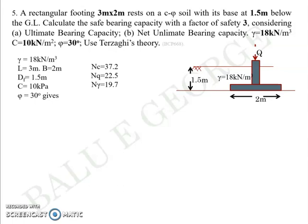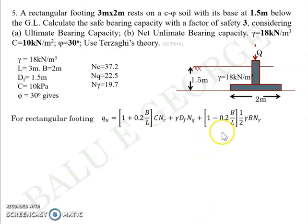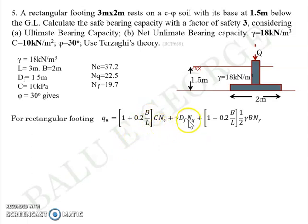Since it is a rectangular foundation, the equation to estimate qu includes two shape factors: 1 plus 0.2(B/L) and 1 minus 0.2(B/L), in the first and third terms respectively. B, L, C, Nc, Nq, and Nγ parameters are known from phi equal to 30 degrees. Gamma is directly given as 18. Nothing is said about the water table, so you don't have to worry about the effect of water table. Df is 1.5m, and every other term is already given in the question.